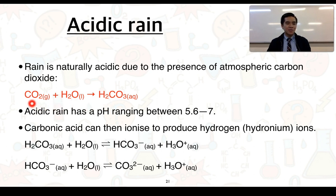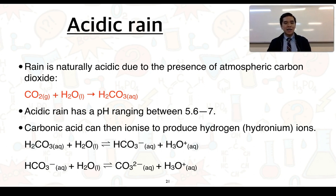So carbon dioxide reacts with water to produce carbonic acid as its oxy acid. This reaction is what results in rain naturally having a pH between 5.6 and 7. That occurs because carbonic acid can then ionize and produce hydrogen ions, but keep in mind that this reaction does not readily occur — carbonic acid is classified as a rather weak acid.